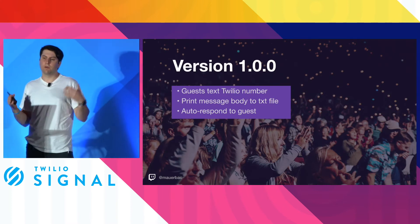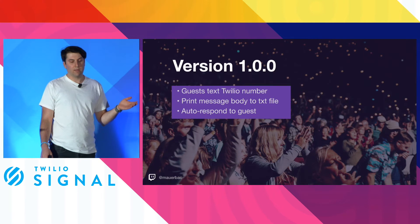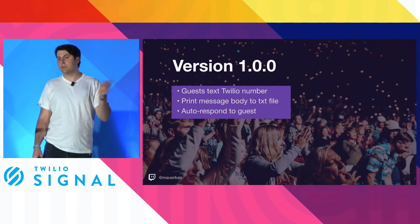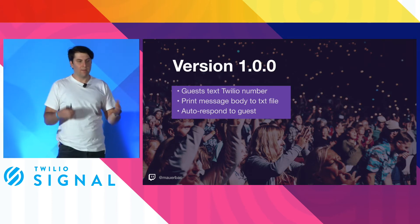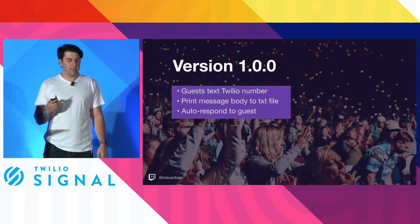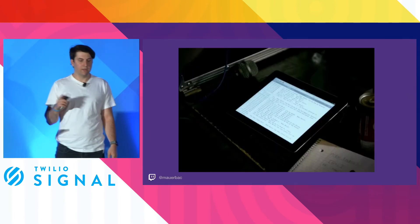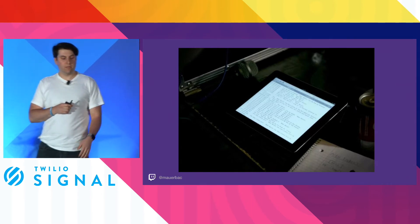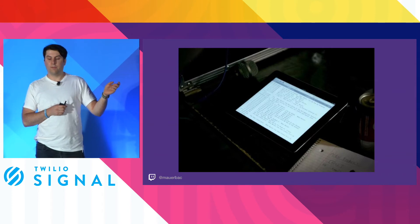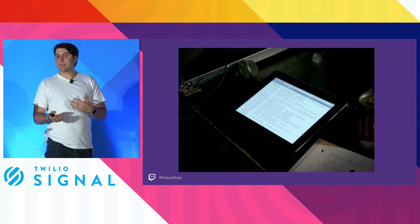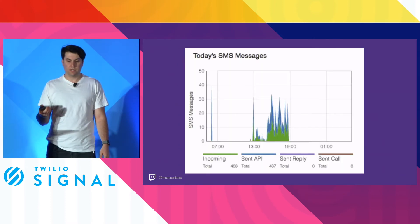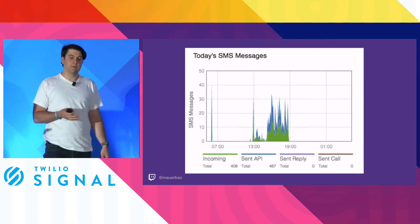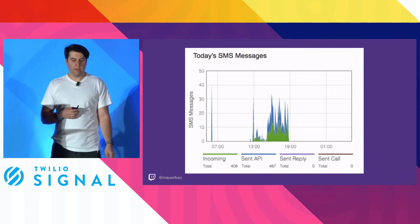So I sat down and thought about version one. To make it super simple, guests could send a text message to a Twilio number with a song request, and I would just print that body into a text file, then auto-respond back saying 'thanks for your text message.' At this point I was at parity with something like a clipboard. I tried it at an event—you can see the screenshot with from numbers on the left and the request body in the middle. Party goers were super excited and we got around 400 requests, which was mind-blowing.